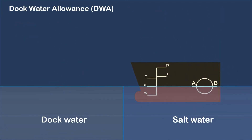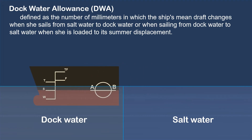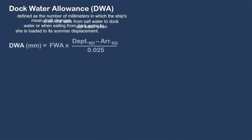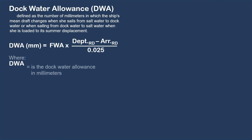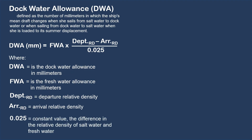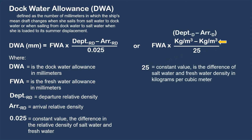Let us proceed to dockwater allowance. Dockwater allowance is defined as the number of millimeters by which the ship's mean draft changes when she sails from saltwater to dockwater, or from dockwater to saltwater, when loaded to her summer displacement. The formula is: DWA = FWA × (departure RD − arrival RD) ÷ 0.025, where 0.025 is the difference in relative density between saltwater and freshwater. If using density in kg/m³, the divisor becomes 25, the difference between saltwater and freshwater density in kg/m³.